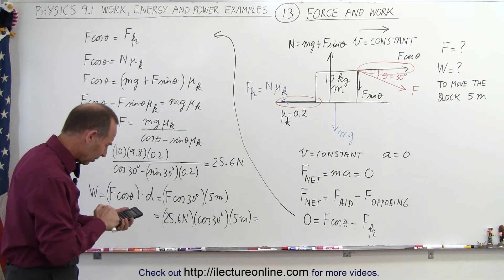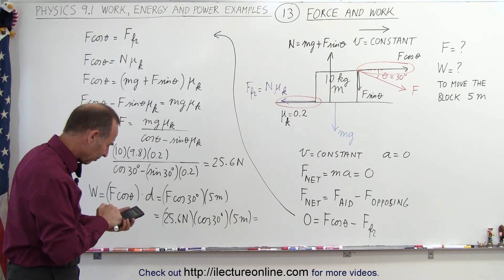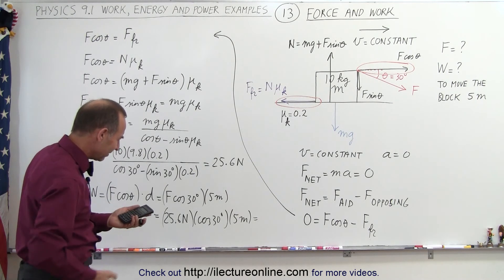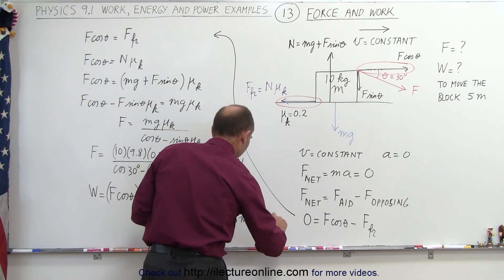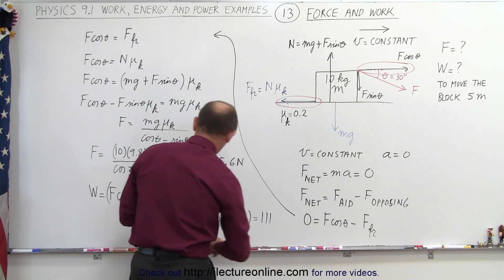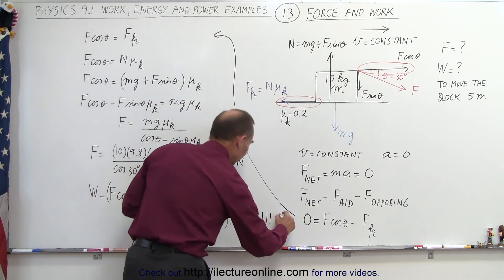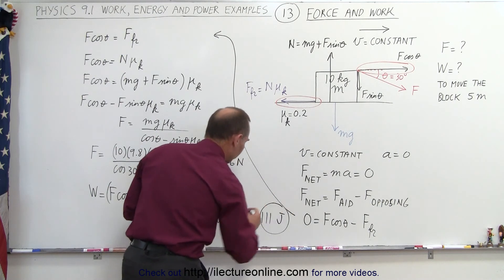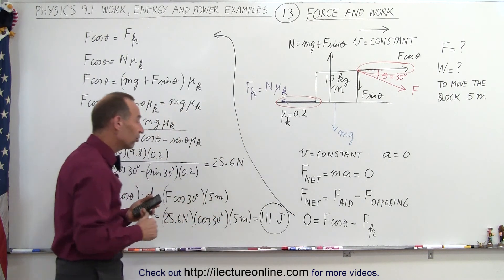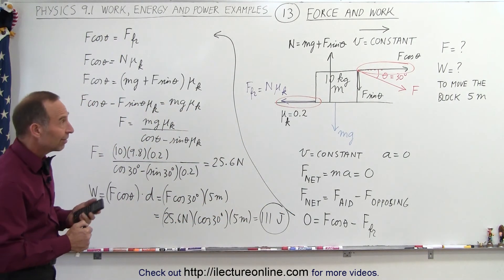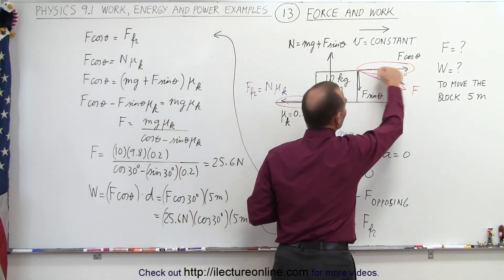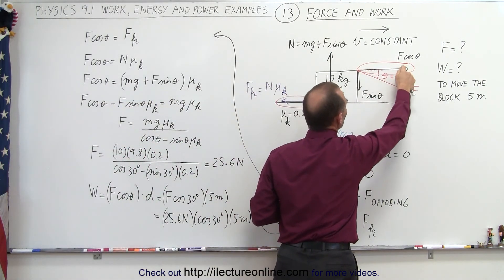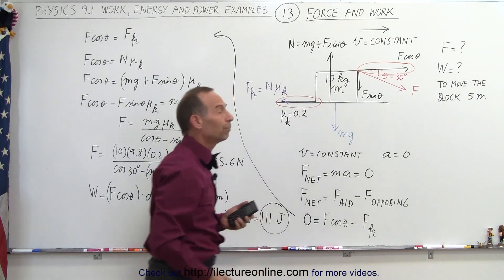Calculating: 25.6 times cosine of 30 degrees times 5 gives approximately 110.8, about 111 joules. The key here is that we only take the component in the same direction as the motion to calculate the work done.